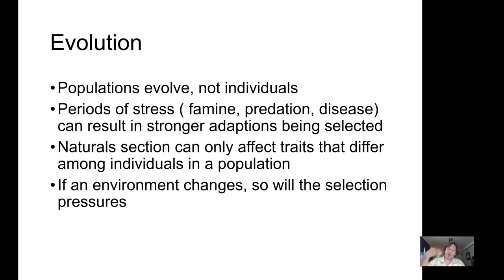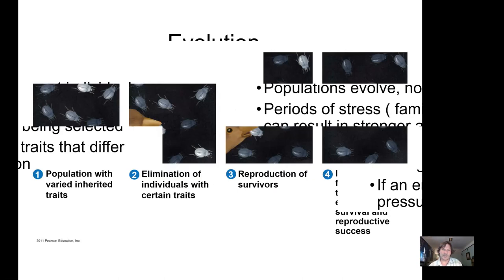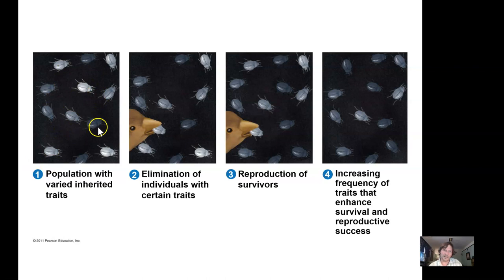Climate change and other environmental factors create selection pressures that determine who survives. After this lecture, I recommend doing the evolution simulation posted in Canvas — it has three factors to explore and shows how population composition and reproductive rates shift over time. This diagram shows a population with a variety of beetles; a bird predator eats the most visually apparent ones, and over time the better-camouflaged beetles become more common — a simple illustration of natural selection.